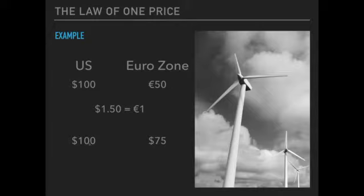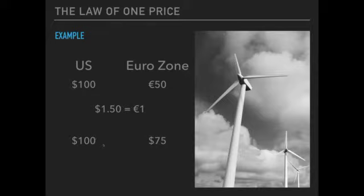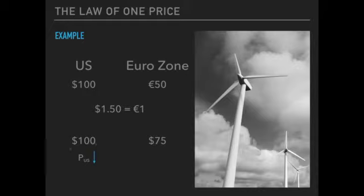We can see that the item is $100 in the United States and $75 in the euro zone. What's going to occur is that an individual could purchase the item in the euro zone for $75, and because there are no transportation costs and no barriers to entry, they can ship that item to the United States and sell it at a profit. They are not going to sell it at $100 because that is the equilibrium price in the U.S. market — quantity supplied and quantity demanded are equal. To induce additional sales of the item purchased in the euro zone, you need to lower the price.